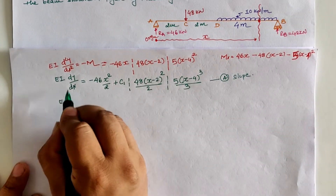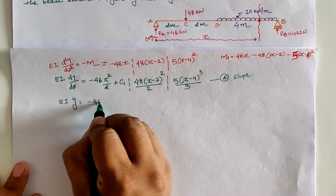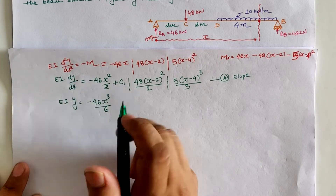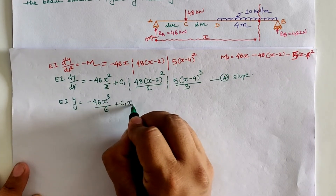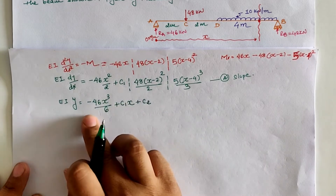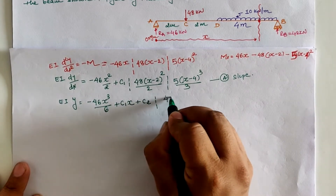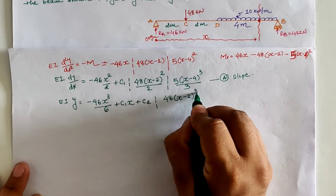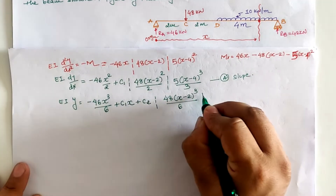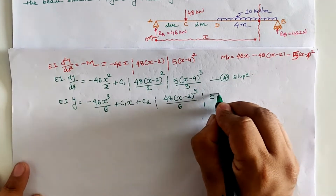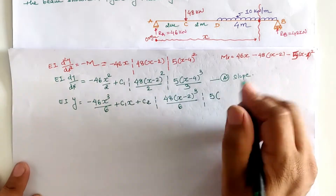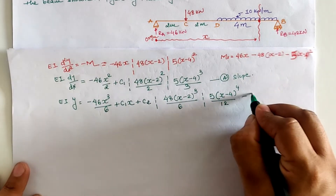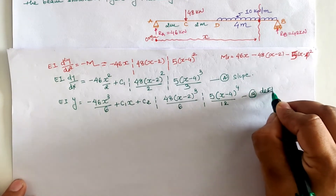Integrating again gives the deflection equation (Equation B) with constants C1 and C2. The x squared term integrates to x cubed over 6; C1 integrates to C1·x; the (x minus 2) squared term gives (x minus 2) cubed over 6; and the 5/3 coefficient gives 5·(x minus 4) to the power 4 divided by 12.